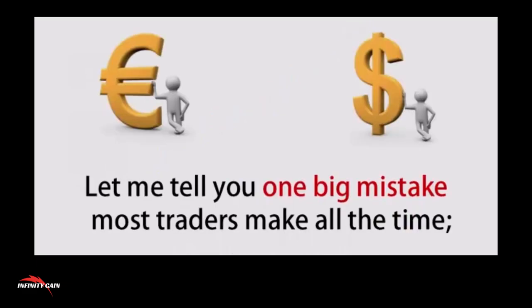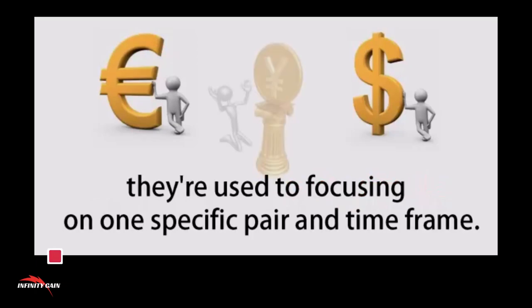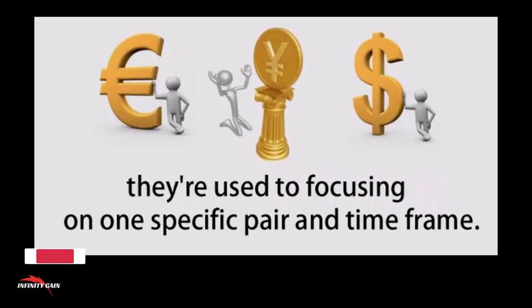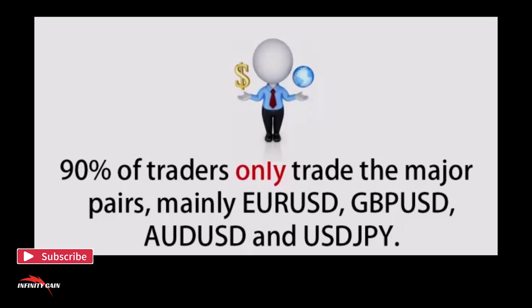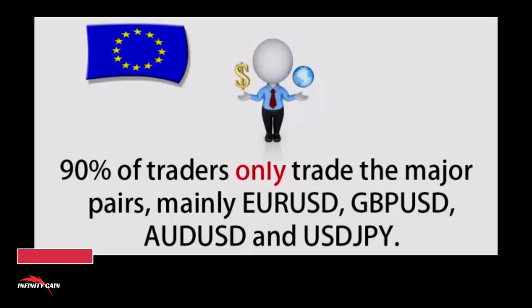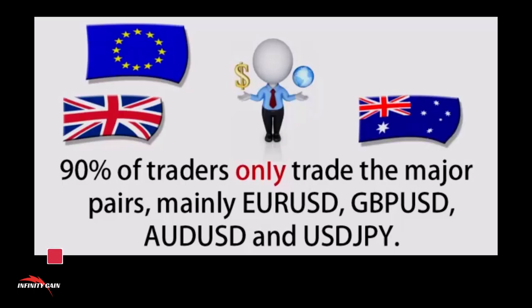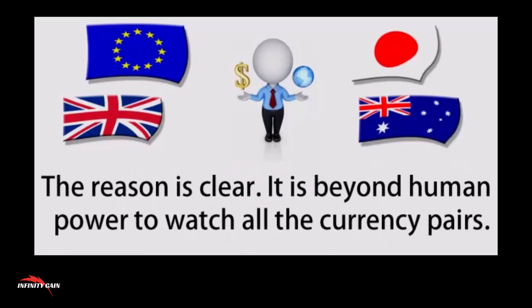Let me tell you one big mistake most traders make all the time. They're used to focusing on one specific pair and time frame. 90% of traders only trade the major pairs — mainly the Euro, the Cable, the Aussie and the Yen. The reason is clear: it's beyond human power to watch all the currency pairs.